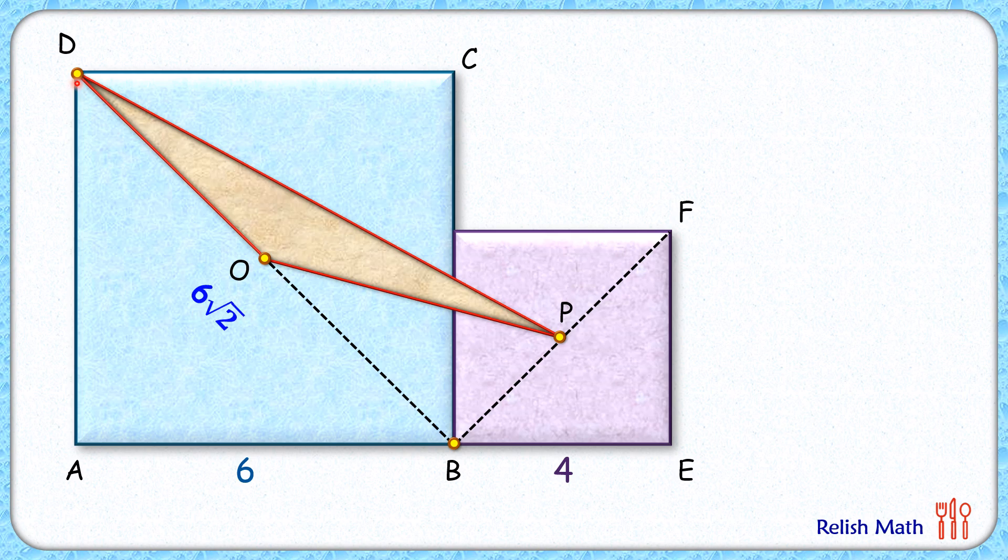O is the midpoint, so DO length will be half of it or 3 root 2. Same way FB length will be 4 root 2.